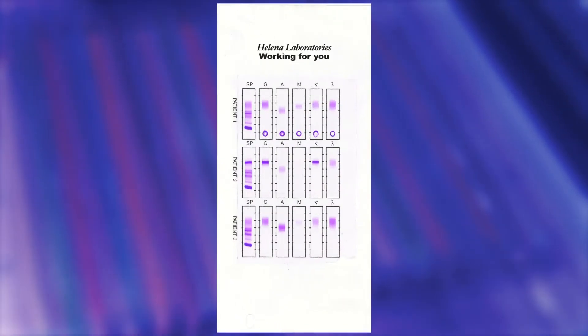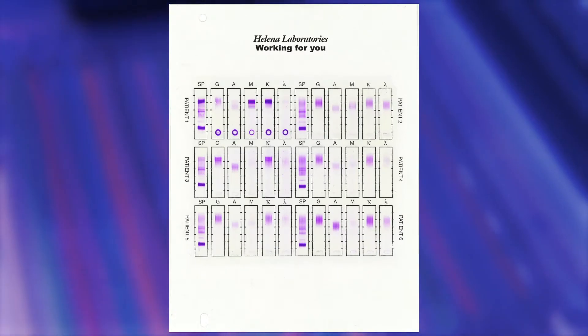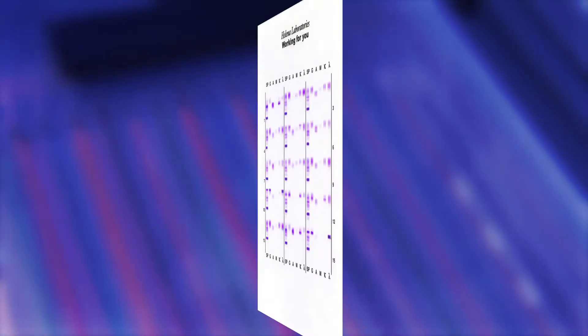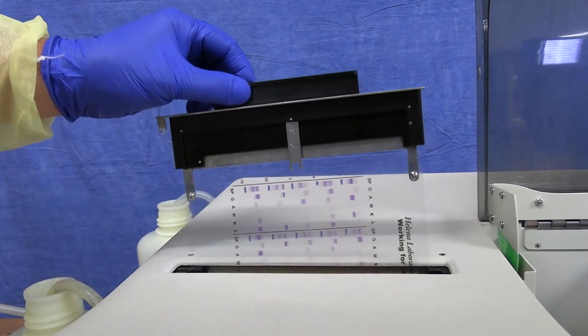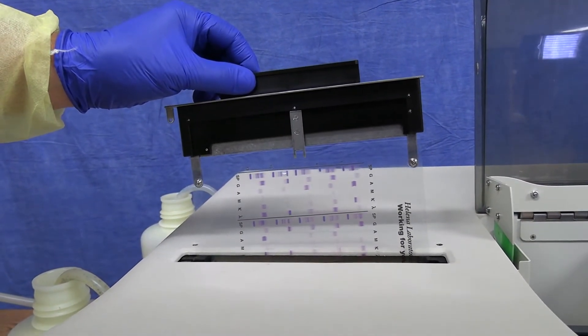IFE gel configurations are available for 3, 6, 9, and 15 complete profiles. To increase efficiency, serum and urine specimens can be run on the same gel at the same time.